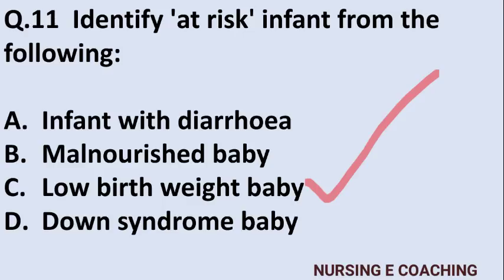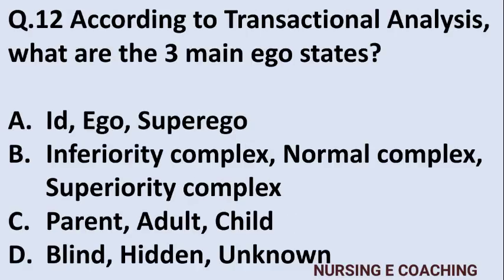Question 12: According to transactional analysis, what are the 3 main ego states? Option A: ID, ego, super ego, Option B: inferiority complex, normal complex, superiority complex, Option C: parent, adult, child, Option D: blind, hidden, unknown. Answer is Option C — parent, adult, child.